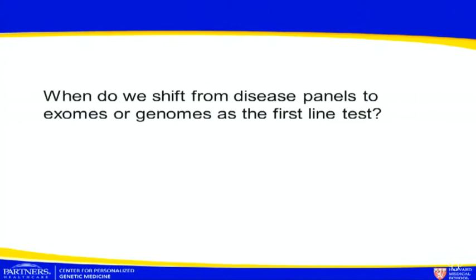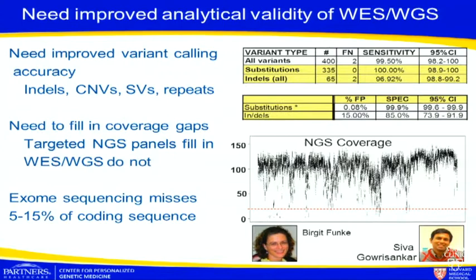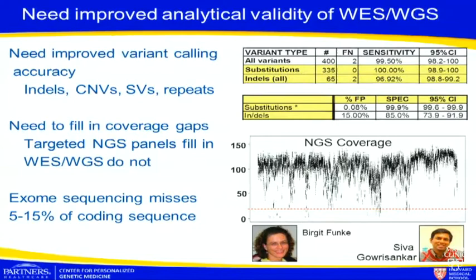So when is it that we would shift from disease panels to exomes or genomes as the first-line test? There are several things we need to improve upon before we make that complete transition. One is improved variant-calling accuracy. Our next-gen disease-targeted panels do quite well for substitutions — we've detected them all with sufficient coverage. Indels are not as good; we get about 97%, and the false positive rate for indels is about 15%. All of that is dependent on coverage, and in our targeted assays we don't call anything below 20x coverage.